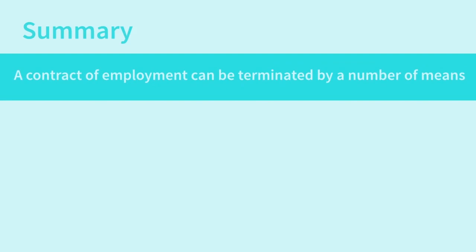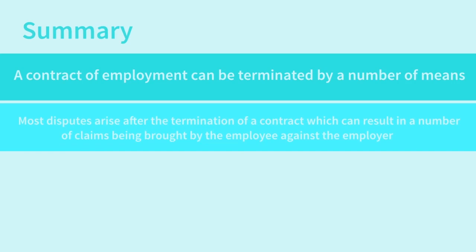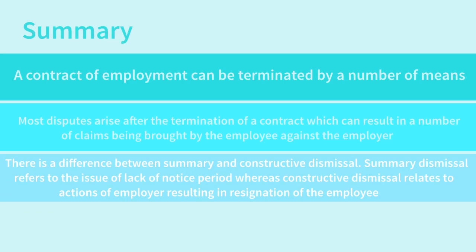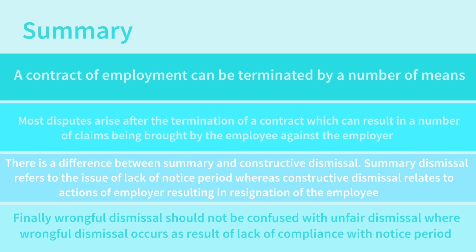In conclusion, a contract of employment can be terminated by a number of means. Most disputes arise after the termination of a contract, which can result in a number of claims being brought by the employee against the employer. There is a difference between summary and constructive dismissal: summary dismissal refers to the issue of lack of a notice period, whereas constructive dismissal relates to the actions of employers resulting in the resignation of the employee. Finally, wrongful dismissal should not be confused with unfair dismissal, where wrongful dismissal occurs as a result of lack of compliance with the notice period.